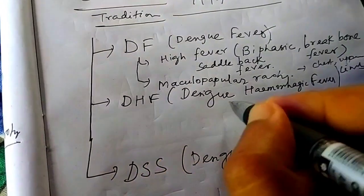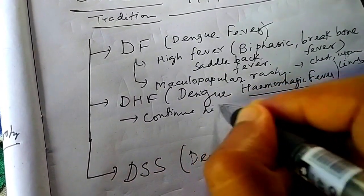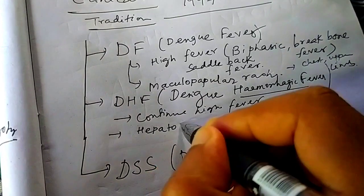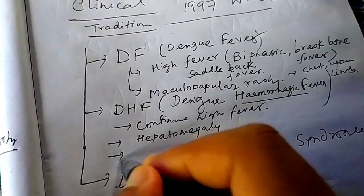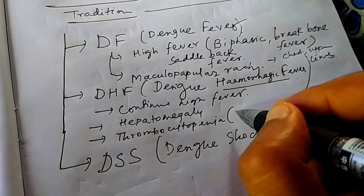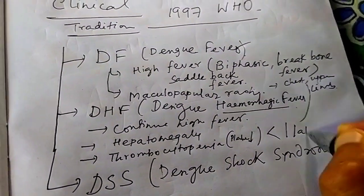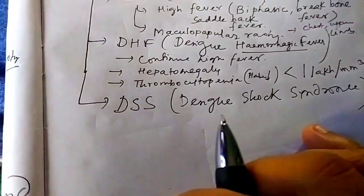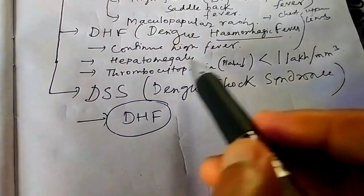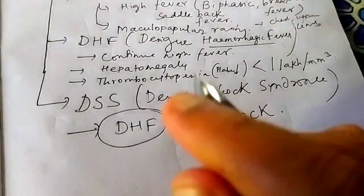Dengue hemorrhagic fever is characterized by hemorrhage. Continuous high fever is there, along with hepatomegaly. And you will get thrombocytopenia — decrease in platelet count, less than 1 lakh per millimeter cube. Dengue shock syndrome has all the features of dengue hemorrhagic fever — continuous fever, hepatomegaly, thrombocytopenia — along with shock. That is why it is known as dengue shock syndrome; it is more severe.